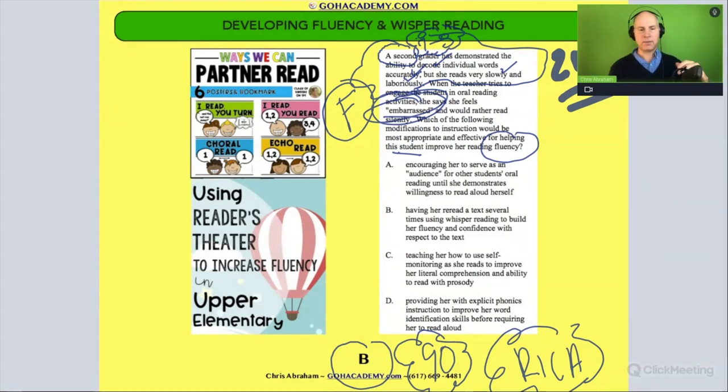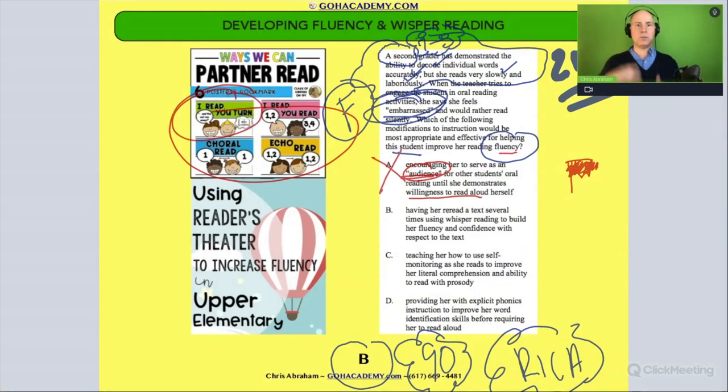Here's the first one: encourage her to serve as an audience for other students' oral reading until she demonstrates a willingness to read aloud herself. In partner work, it's okay to have one student read while the other turns the page and you take turns. But this one here sounds like a red flag. It sounds like they're just being asked to don't say anything until you're willing to read, and I don't think that willingness is going to happen because it's not really addressing her issues with fluency. So we're going to cross this out.